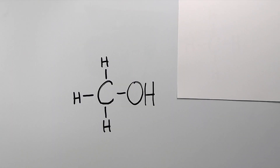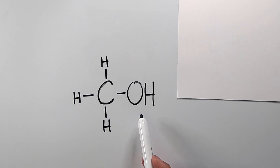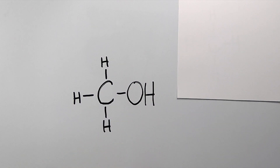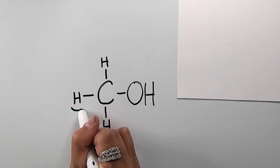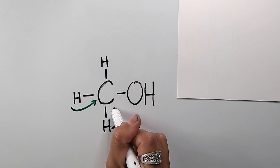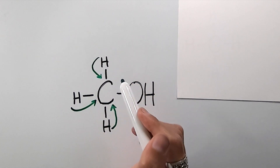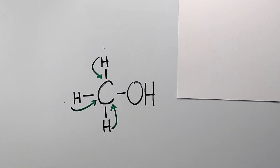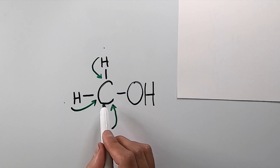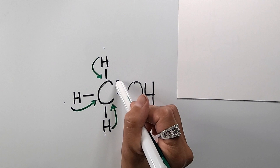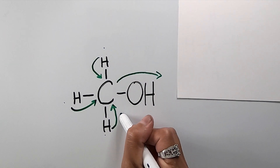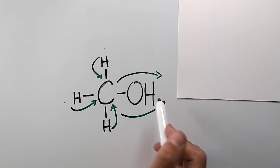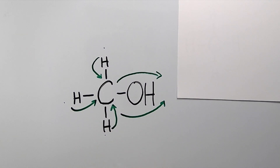So let's look at shielding and deshielding effects in another molecule. It's similar to the previous example; however, I added a hydroxide group here in place of the hydrogen. Carbon is more electronegative than the hydrogens it's attached to, so it will cause an electron withdrawing effect, withdrawing electron cloud density from the hydrogen toward the carbon, shielding the carbon but deshielding the hydrogens. Oxygen on this end is more electronegative than the carbon, so it will cause an electron withdrawing effect, withdrawing electron cloud density from the carbon toward itself, shielding itself and deshielding the carbon.